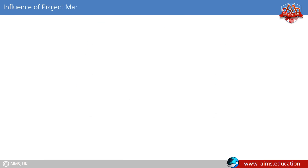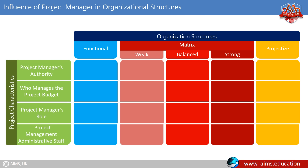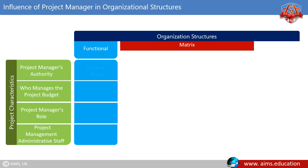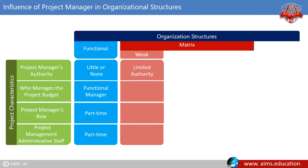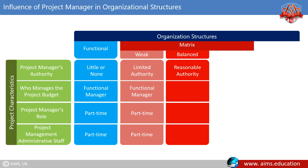In a functional organization structure, the project manager has little or no authority and is often a part-time person with part-time project management administrative staff. The functional manager manages the project budget, and the functional structure is the weakest of all. In a weak matrix, the project manager has limited authority with a part-time role and may have part-time administrative staff; the functional manager manages the project budget. In a balanced matrix, the project manager has reasonable authority with a full-time role and may have part-time administrative staff; both the functional manager and the project manager share management of the project budget.